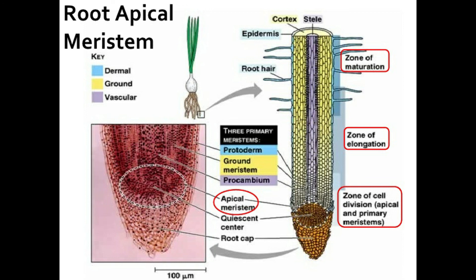Some plant organs are determinate — they grow to a certain size and then stop. These include leaves, flowers, and fruits. While others are indeterminate — they grow by meristems that continually replenish themselves, remaining youthful. Vegetative roots and stems are examples of indeterminate growth.